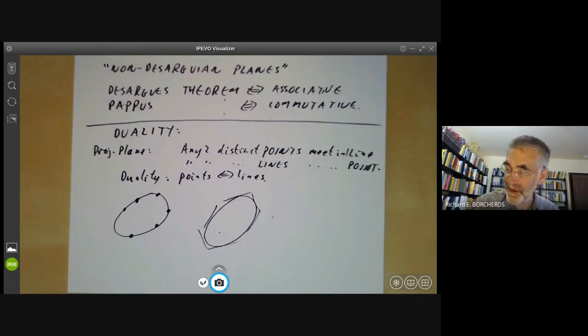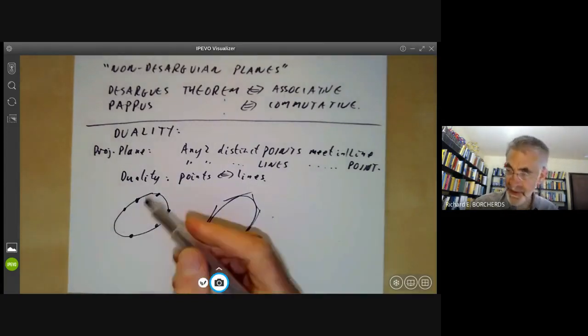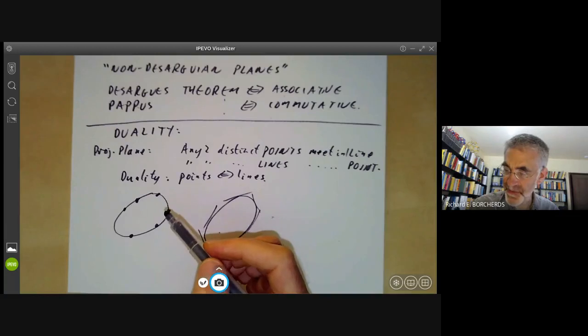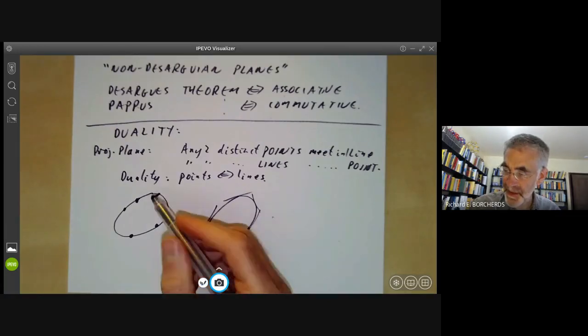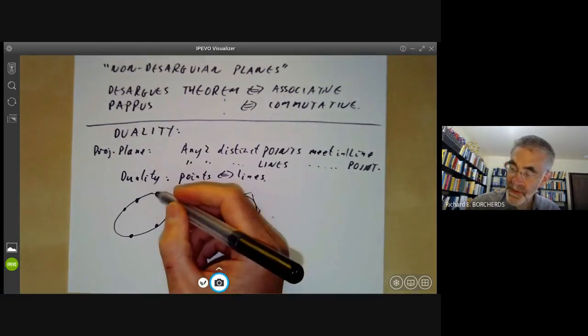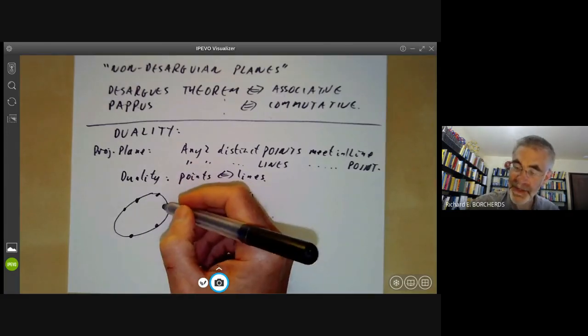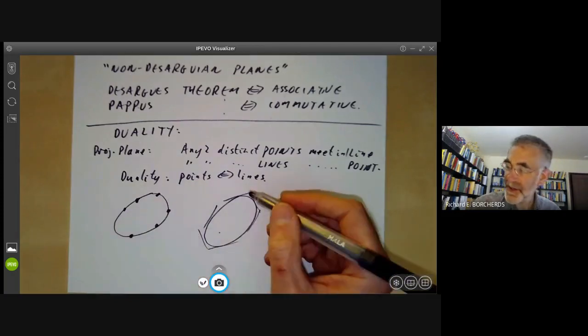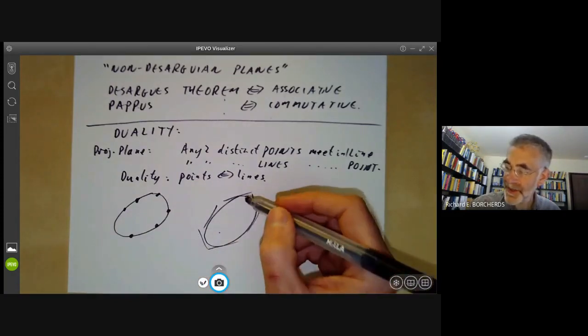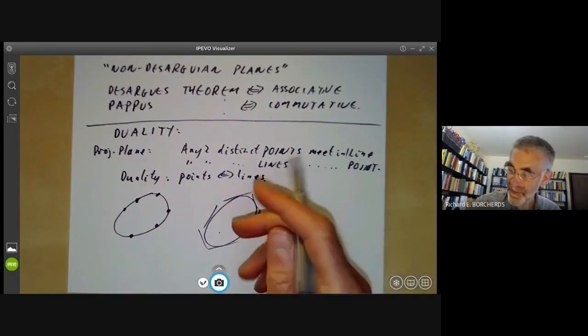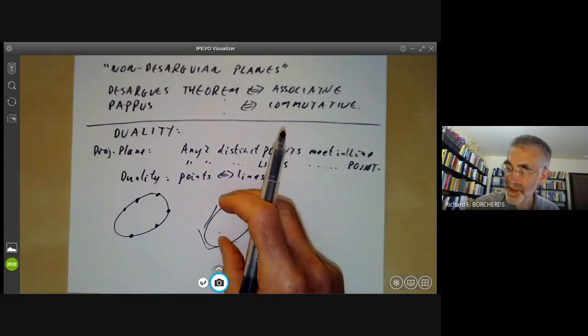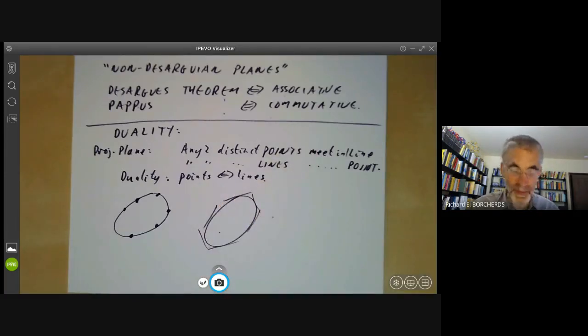So if you take three points given by intersecting pairs of lines, they all lie in a straight line. And this says if you take three lines given by joining up pairs of points in three different ways, then they all meet at a point.